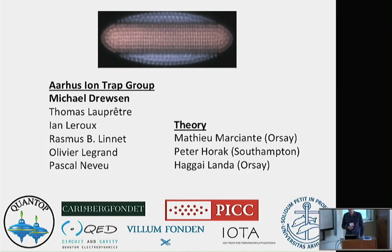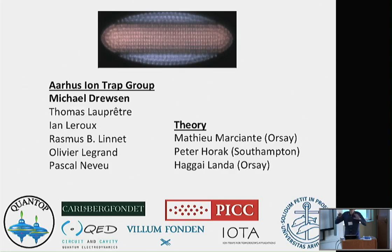Another question about what controls the transition between BCC and FCC structures. When you have many ions, there are many configurations which are almost at the same energy — very close in energy together. Typically triangular structures appear. For an infinite 3D crystal, the ground state would be a BCC structure, but in practice finite-size effects and the cooling in the trap really determine what structure you have, and these structures vary a lot.